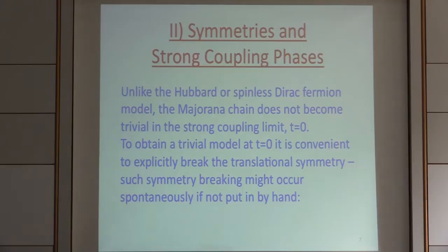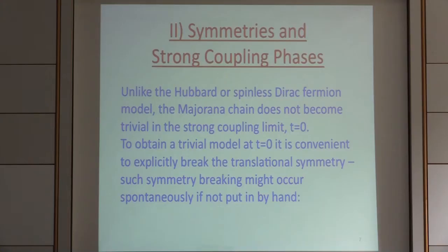The first thing to notice about this model, which makes it more challenging, is that unlike the Hubbard model or the spinless fermion model, it's not easy to understand in the strong coupling limit. Even with purely interaction terms, the model is not trivial to solve. After numerical simulations, we came to the conclusion that there is a spontaneously broken translational symmetry in the strong coupling limit.